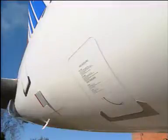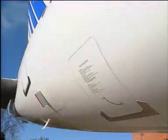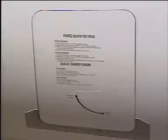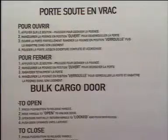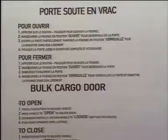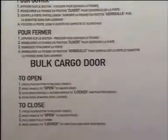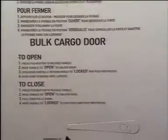Bulk cargo door operation. The bulk cargo compartment door is installed on the lower right side of the fuselage. The bulk door is a manually operated door. The operating procedures are labelled on the door.